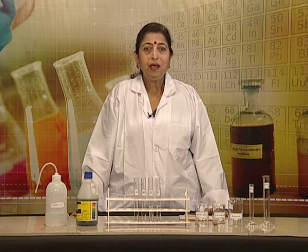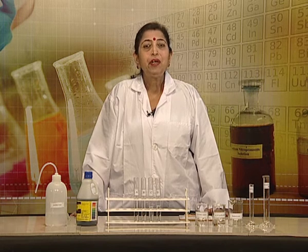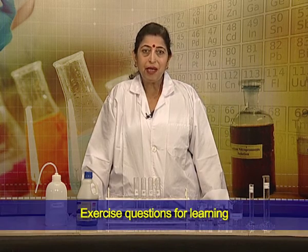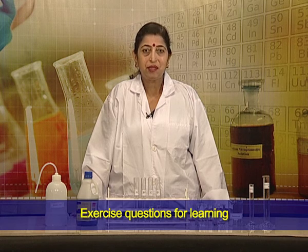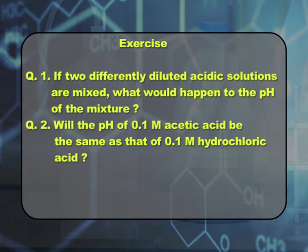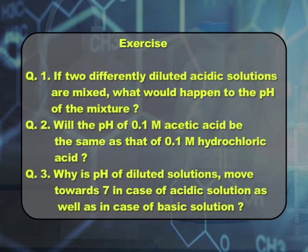After learning how pH value varies with dilution of an acidic and a basic solution, let us test our understanding with a few exercise questions. First: if two differently diluted acidic solutions are mixed, what would happen to the pH of the mixture? Second: will the pH of 0.1 molar acetic acid solution be the same as that of 0.1 molar hydrochloric acid solution? Why does pH of a diluted solution move towards 7 in the case of both an acidic and a basic solution?